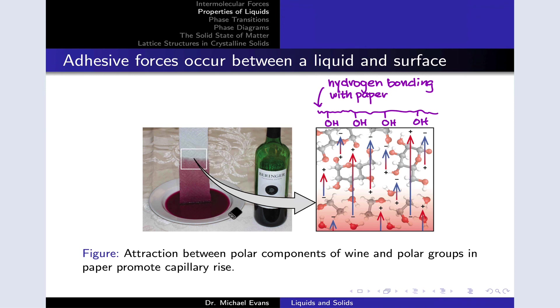Those cause this front to move upward, and wine continues to travel up the paper towel behind the front due to cohesive forces between the molecules in the wine itself. So a combination of adhesion and cohesion promotes this capillary rise effect.